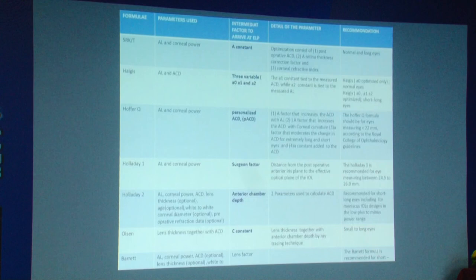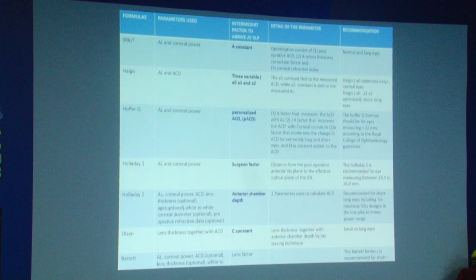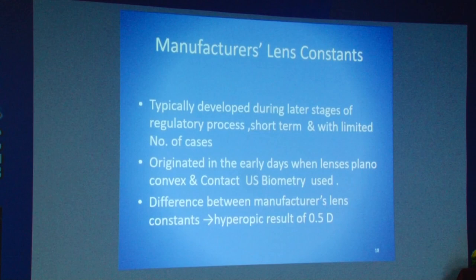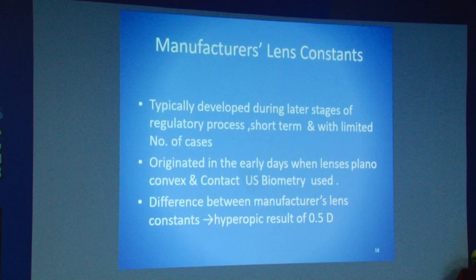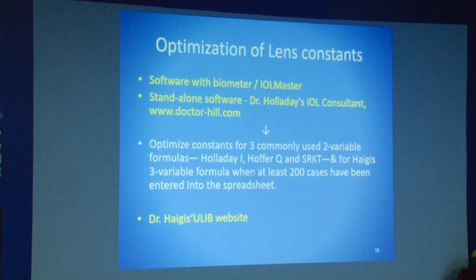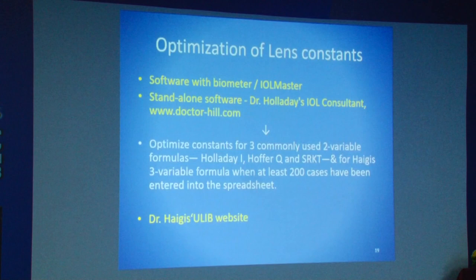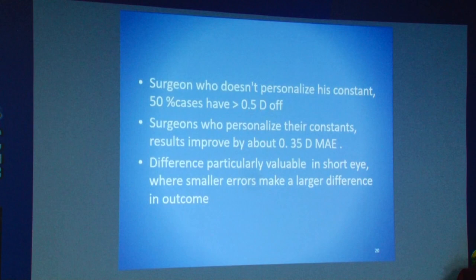There are intermediate factors used to estimate effective lens position. SRKT uses the A constant; Haigis and Holliday 1 use personalized constants; Haigis uses A0, A1, A2; Hoffer uses Q; Holliday 2 uses anterior chamber depth; Holliday 1 uses surgeon factor; Olsen uses C constant; and Barrett uses lens factor. These lens constants were typically developed during the later stages of the regulatory process with short-term, limited cases using plano-convex lenses and contact ultrasound biometry. So using only manufacturer's lens constants introduces some error. It makes sense to optimize your lens constants — you can analyze your own data or visit www.drhill.com or Dr. Haigis's ULIB website.